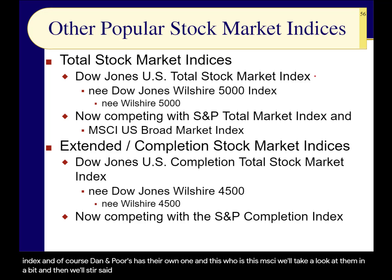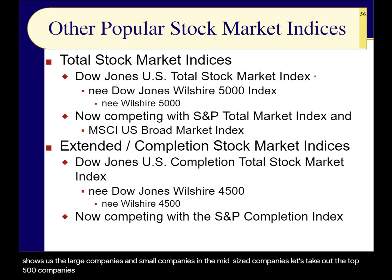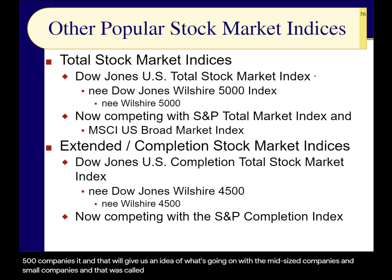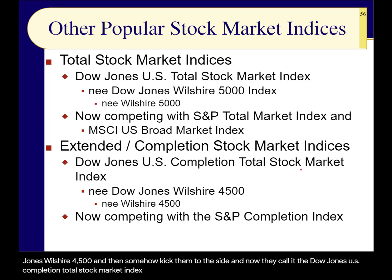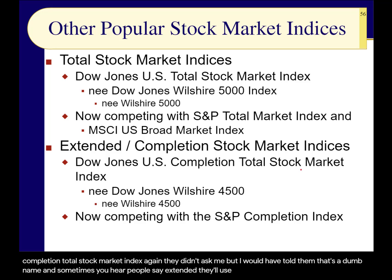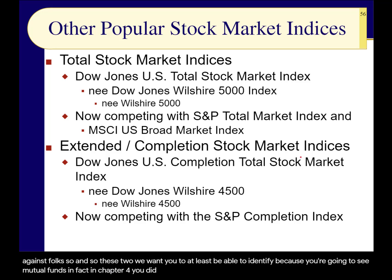Wilshire then said: we've got this Wilshire 5000 showing large, small, and midsize companies — let's take out the top 500 companies, which is the S&P 500, and that will give us an idea of what's going on with the midsize and small companies. That was called the Wilshire 4500. Then Dow Jones partnered with them — Dow Jones-Wilshire 4500 — and then renamed it the Dow Jones US Completion Total Stock Market Index, or sometimes called 'extended.' You must be able to identify these two because you'll see mutual funds based on them.